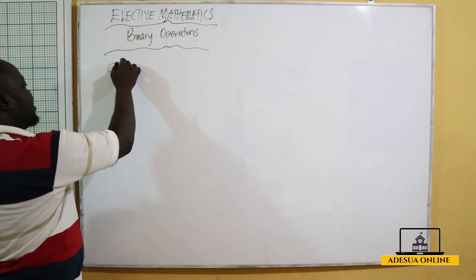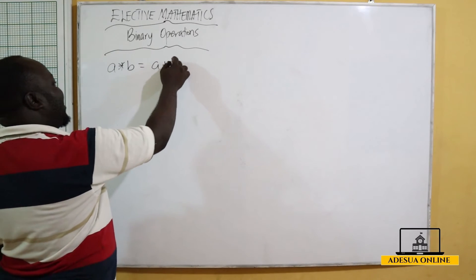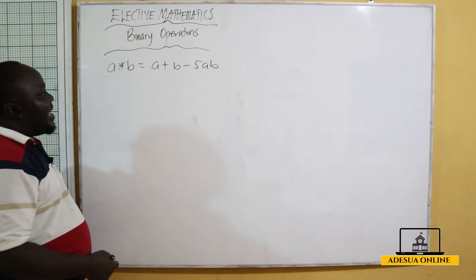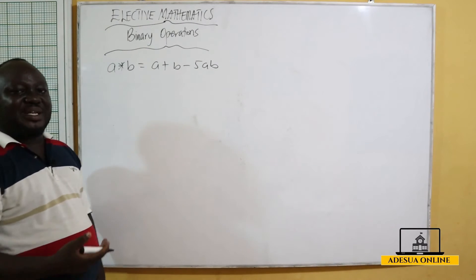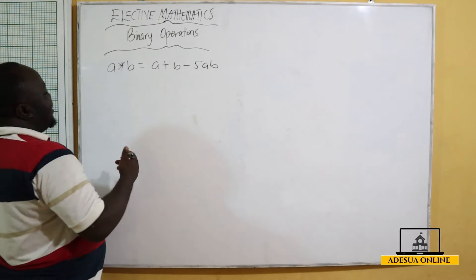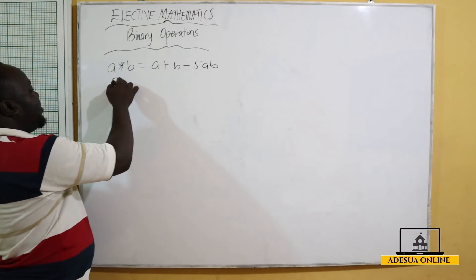If I have a operation b equals a plus b minus 5ab, I have a binary operation being defined on a set of real numbers. I tell you to evaluate, let's say, 5 operation negative 2.